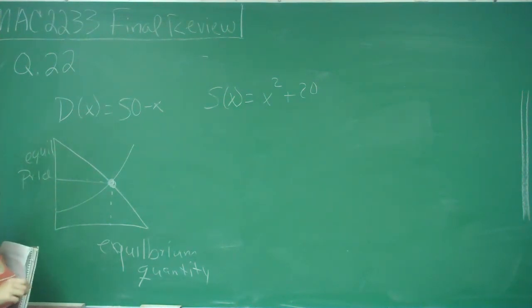So what producer's surplus is is this line for equilibrium price minus our supply function and this is saying that up until we reach this equilibrium price this whole shaded amount that I'm drawing here, that's how much we're going to have in surplus. We're going to be producing that much more.